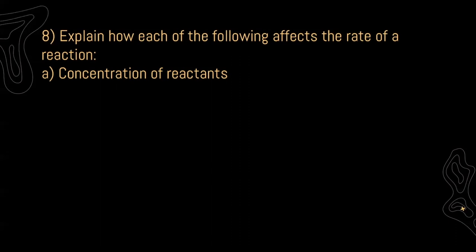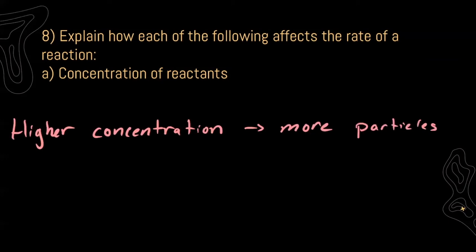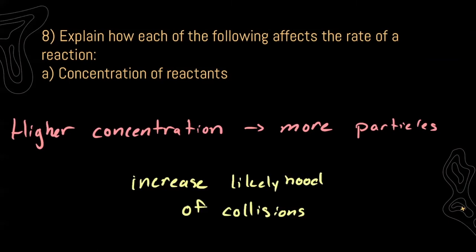Question 8 asks: explain how each of the following affects the rate of a reaction. Let's focus on the concentration of reactants. If we have a higher concentration, that means we have more particles. If we have more particles, then there's going to be an increase in the likelihood of collisions. It works the other way around too — if we decrease our concentration, there are less particles, so the likelihood of collision largely decreases.